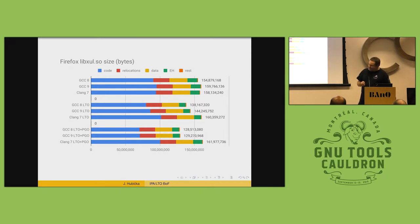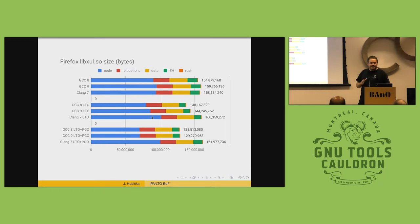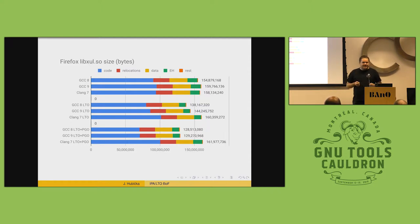We are still producing noticeably smaller binaries than Clang, which I think is important and pays back in performance. If you choose the right benchmark — like loading the 50 most popular web pages — the GCC-built binaries are about 10% faster than Clang. I attribute this mostly to code locality.